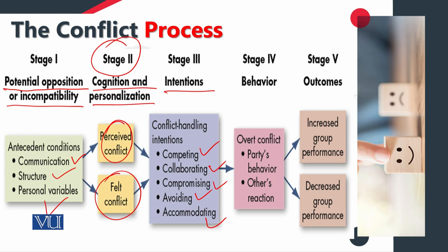It depends on your levels of assertiveness and cooperation. If there is high assertiveness and cooperation, that might be collaborating. If there is high assertiveness but low cooperation, that can be competing. If there is low assertiveness but high cooperation, we can go for accommodating. If there is low assertiveness and low cooperation, that would be avoiding. In the middle of these options there is compromising, and sometimes compromising is not the best option — there is a better option available, which can be adjustment.